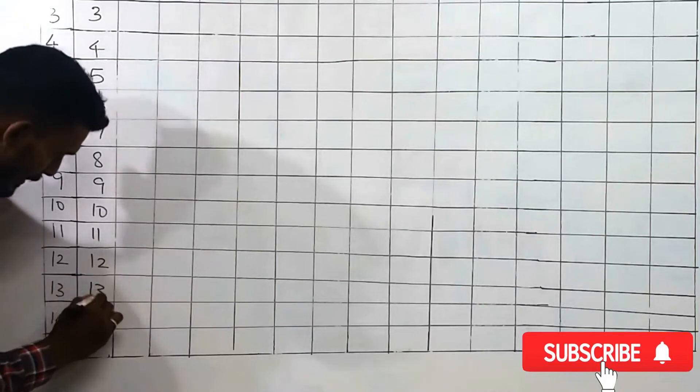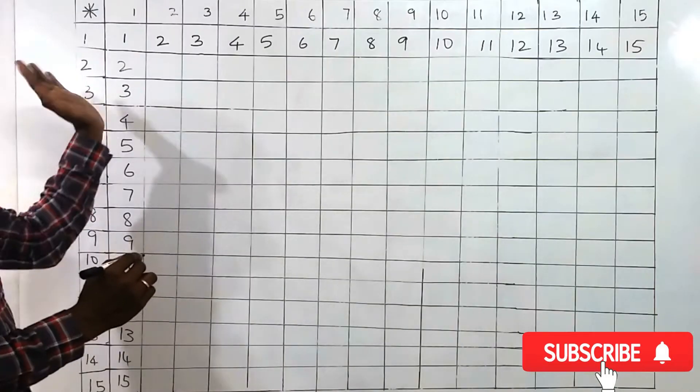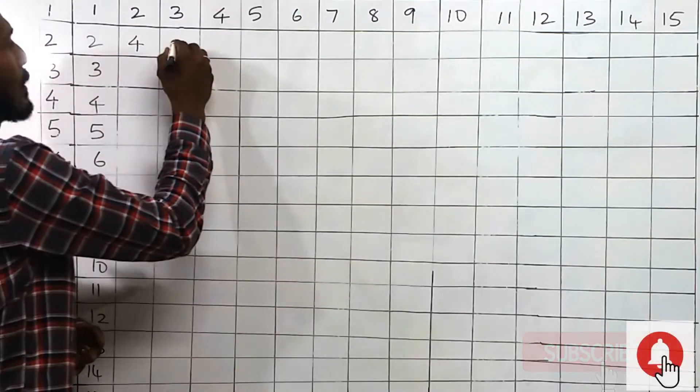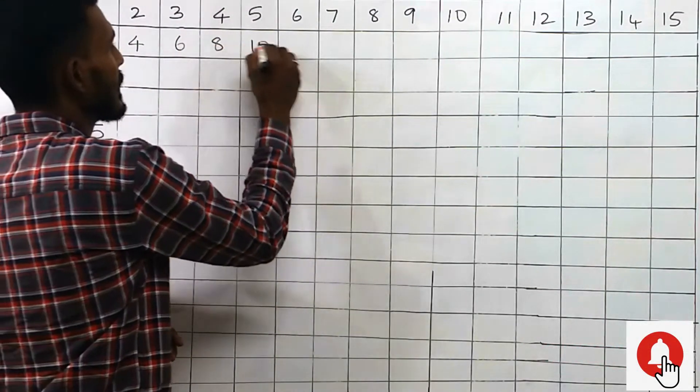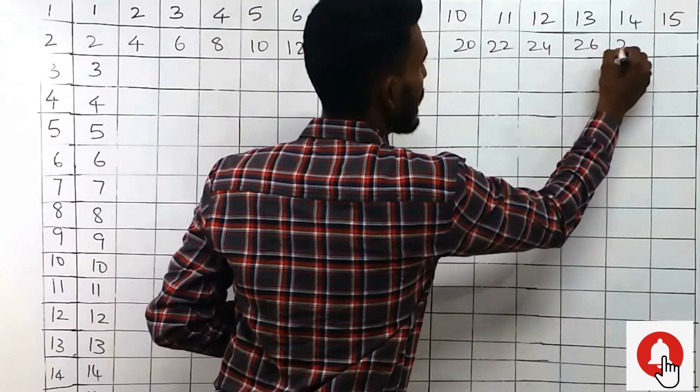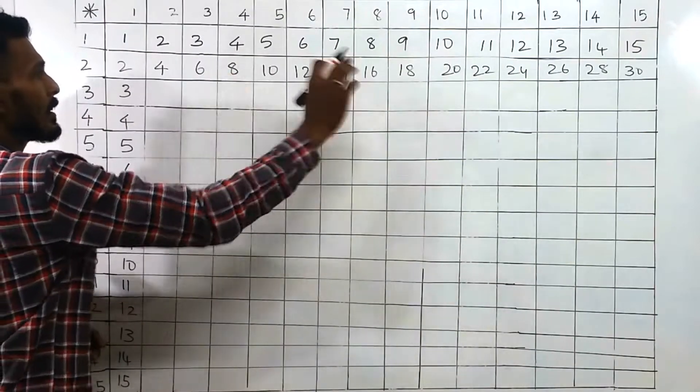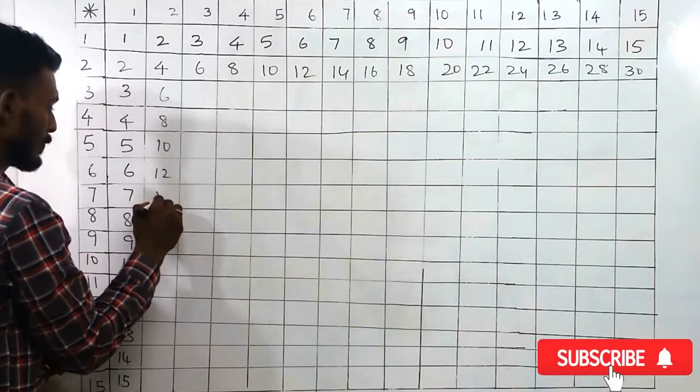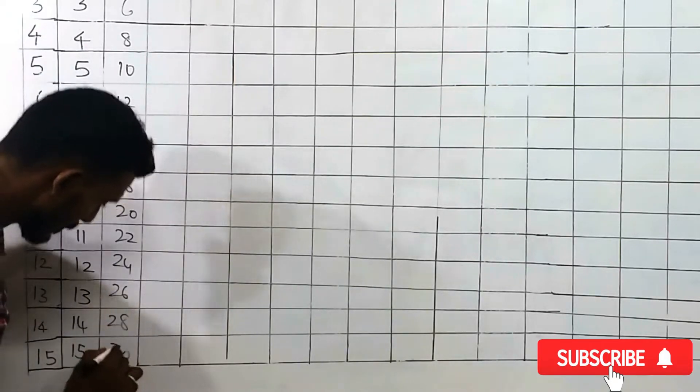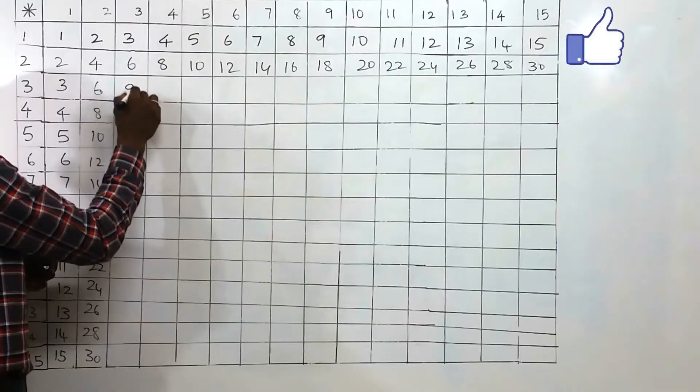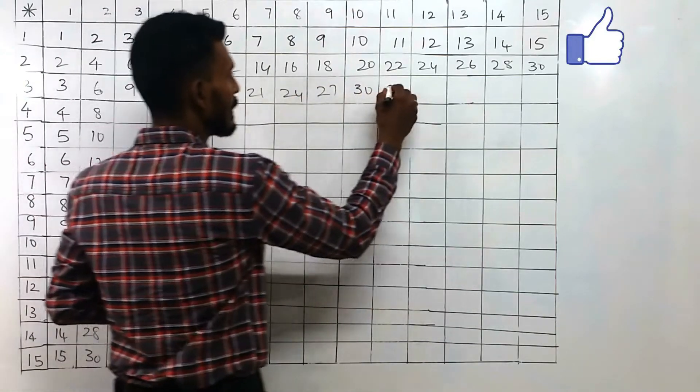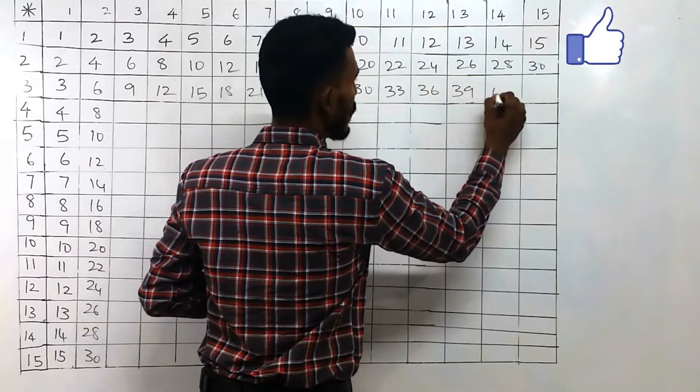In the second row we have to add 2 to the previous number, right? We have to add 2 here, then 4, we will get 4 here. 4 plus 2 is 6, 8, 10, 12, 14, 16, 18, 20, 22, 24, 26, 28, 30. In the third row add 3 to every number: that is 6, 9, 12, 15, 18, 21, 24, 27, 30, 33, 36, 39, 42, and 45.